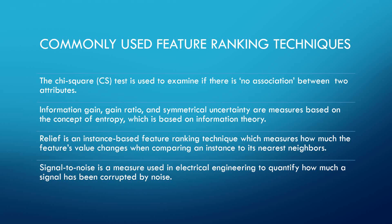Signal-to-Noise (S2N) is a measure used in electrical engineering to qualify how much a signal has been corrupted by noise. It is defined as the ratio of signal power to the noise power corrupting the signal. S2N can be used as a feature ranking method for a binary class problem. Signal-to-Noise favors attributes where the range of the expression vector is large but where most of the variation is due to the class distribution.